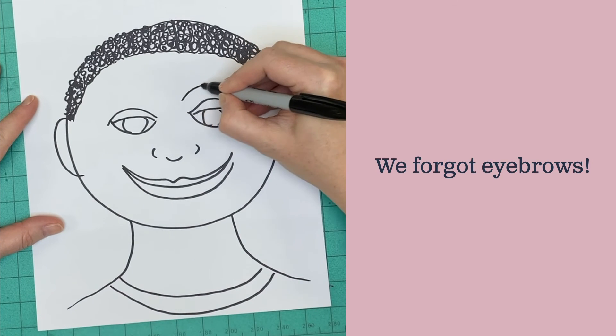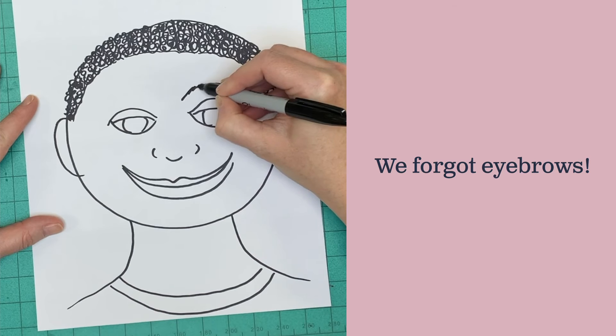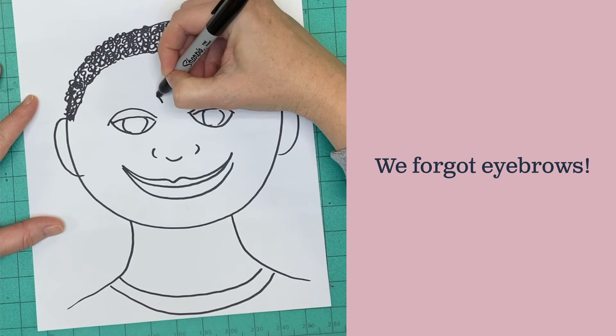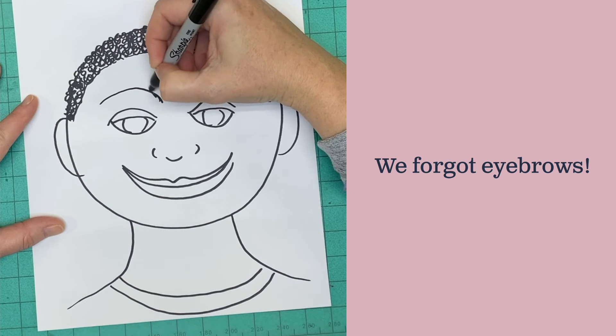We forgot eyebrows. They're going to be a curved line that goes above your eye, and then add a few hairs on them. Don't make them too big or too bushy.